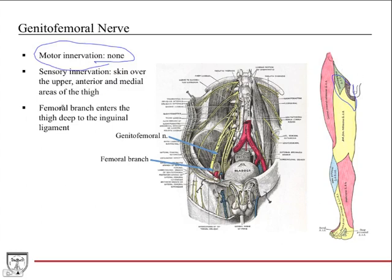The femoral branch enters the thigh deep to the inguinal ligament. Here's the genitofemoral nerve traveling here — it's nice and thin coming off the lumbar plexus. It goes through the psoas and then deep to the inguinal ligament, where you can see the branch coursing out.